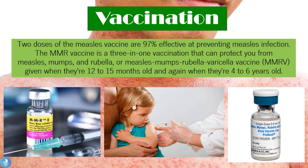There is a vaccine that exists for the measles virus. Two doses of the measles vaccine are 97% effective at preventing measles infection. The most commonly used today is the MMR vaccine, a three-in-one vaccination that protects against measles, mumps, and rubella. Alternatively, there's also the MMRV vaccine, which covers measles, mumps, rubella, and varicella. The two doses are given to children between 12 and 15 months, and again when they're four to six years old, and this is typically done worldwide.